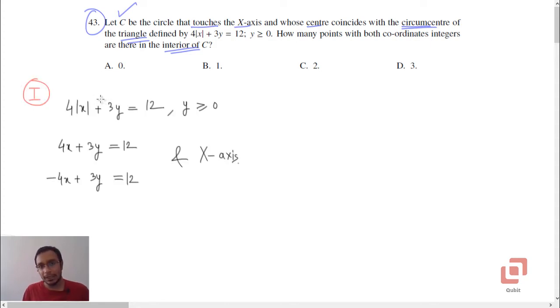So we go to the equations which give us the sides. 4 into mod x plus 3y equal to 12, y greater than or equal to 0. So y greater than or equal to 0 means one of the edges of the triangle is x-axis, y equal to 0. And mod x, so we can now have two lines: 4x plus 3y equal to 12 or 4 into minus x plus 3y equal to 12. Of course, the second line where mod x is equal to negative x will be in the second quadrant as far as our triangle is concerned, and 4x plus 3y equal to 12 will be the side of the triangle in the first quadrant.